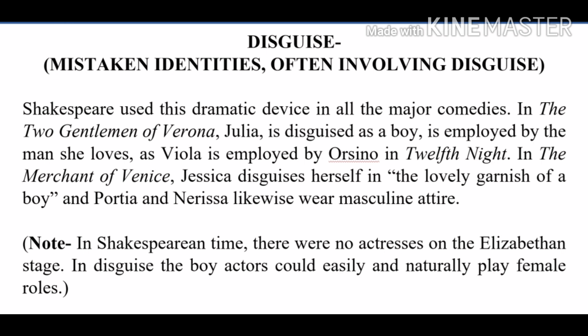In Much Ado About Nothing, apart from the masked ball, Margaret poses as Hero and Hero poses as her cousin. In As You Like It, Rosalind and Celia become Ganymede and Aliena, changing their dress and becoming boys. In All's Well That Ends Well, Helena passes herself off as Diana, and in Measure for Measure, Mariana takes Isabella's place. Women disguising themselves as boys may have been suggested by the fact that there were no actresses on the Elizabethan stage — boy actors could easily play female roles. Additionally, the disguise enables Shakespeare to symbolize one of his favorite themes: the contrast between appearance and reality.